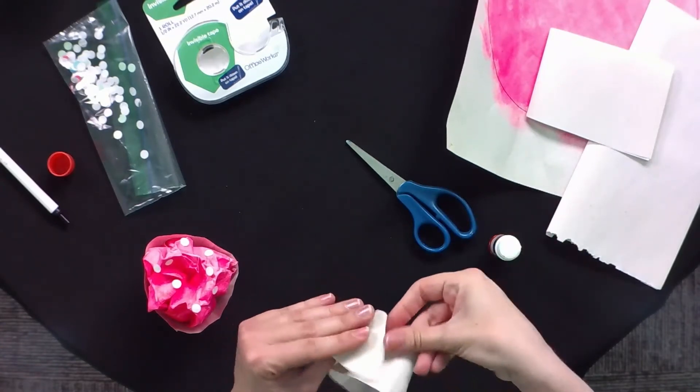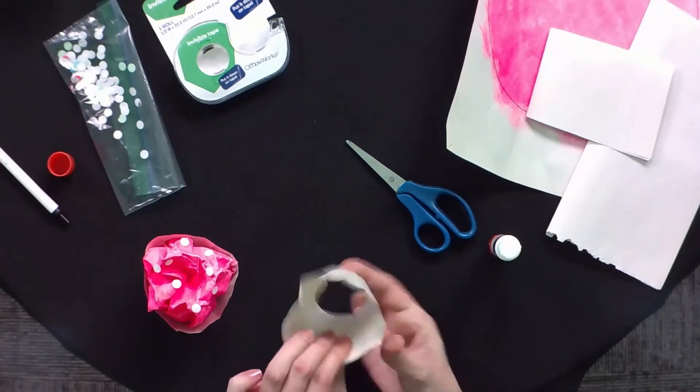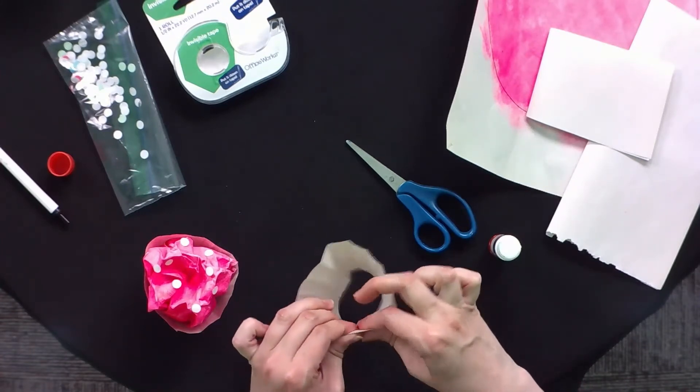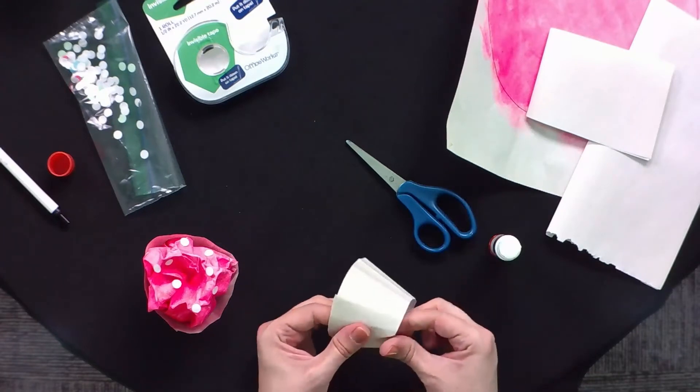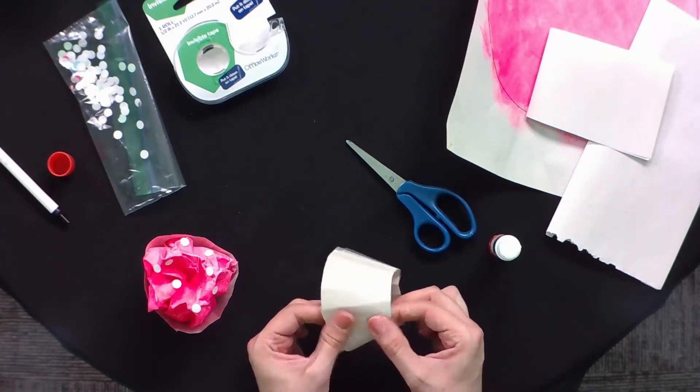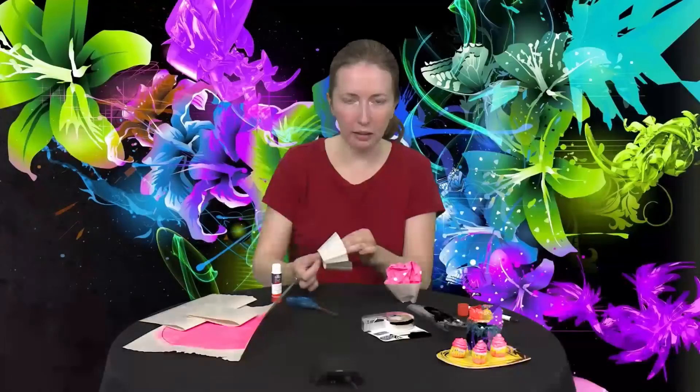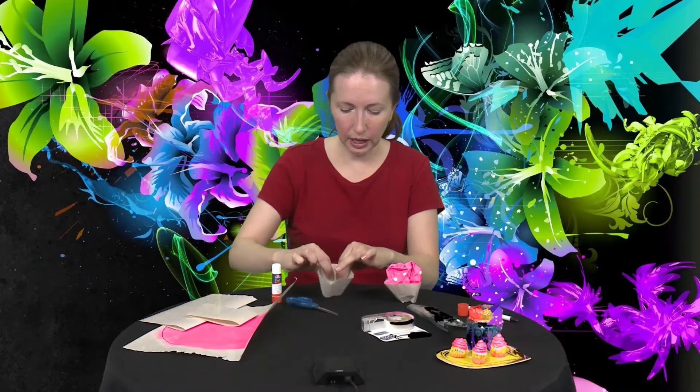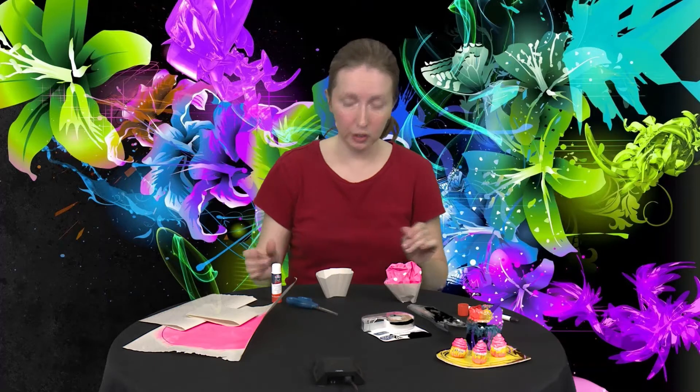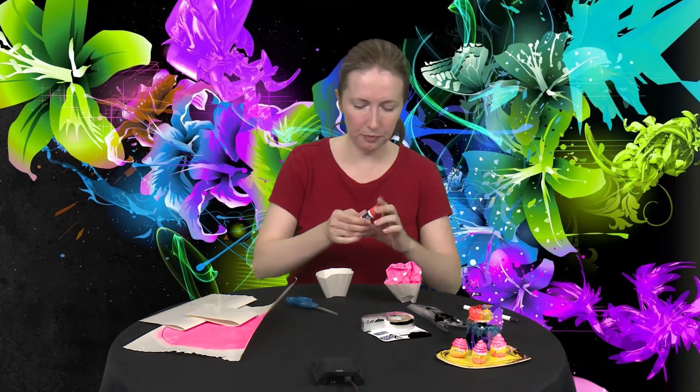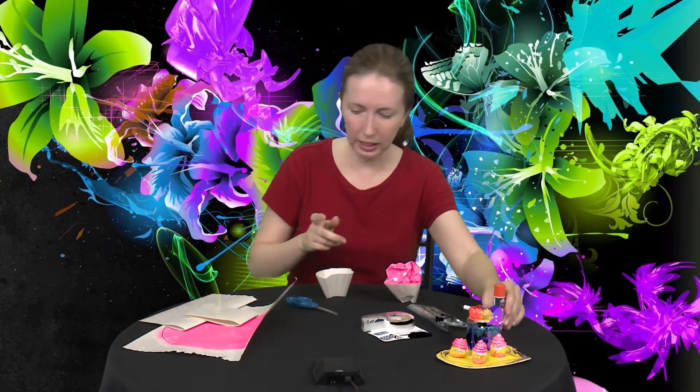So then again, we're going to take that and attach it. Now notice there's a little hole in the bottom. That's a good thing for this project. You're going to see why in a minute. So you might have to hold that down for a little bit. You can always use tape as well. If you don't have a glue stick, make sure you put the cap on your glue stick.